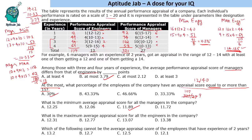13 into 13 = 169, and we are left with 5 remaining. So the answer is 13.38 as the maximum average appraisal score for all engineers.